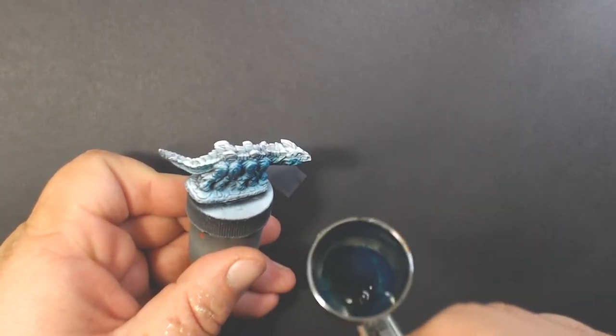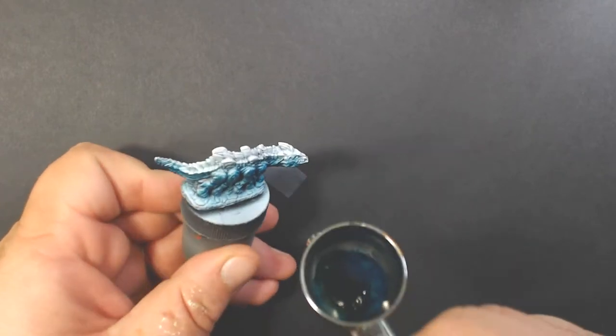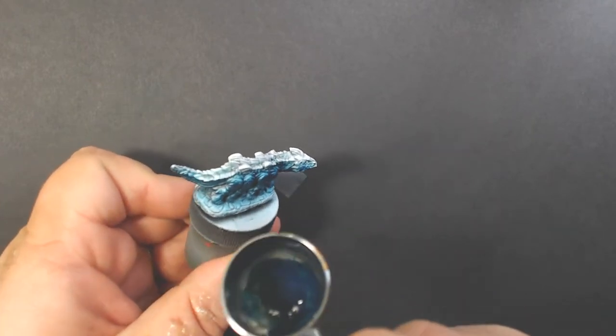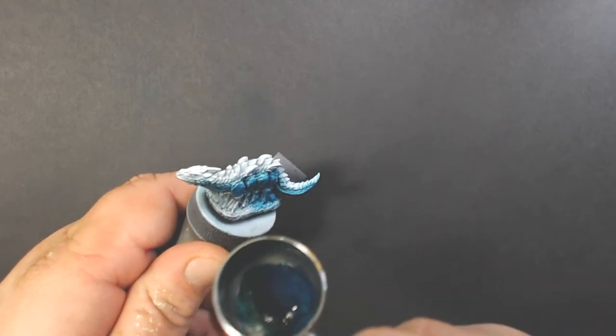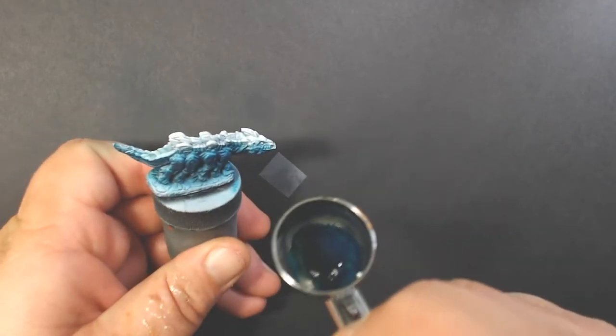We're going to airbrush on some Scale 75 Huldra Blue. You could brush this on with a paintbrush if you do not have an airbrush, and this will take two thin coats.